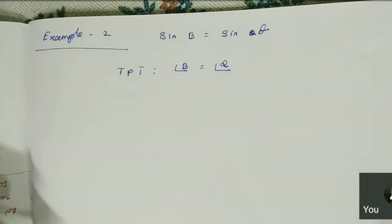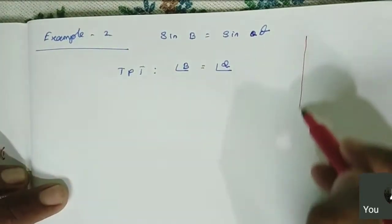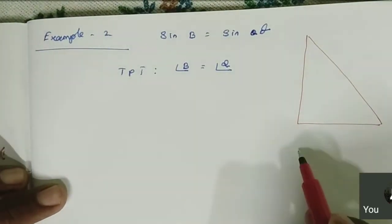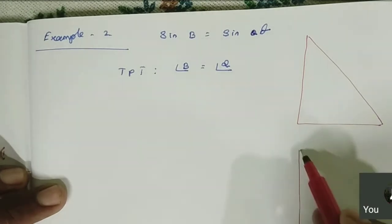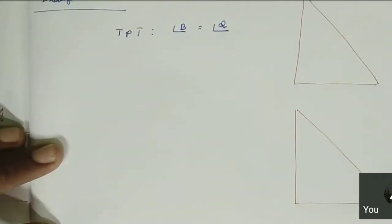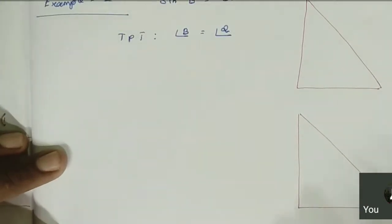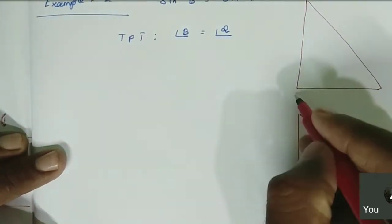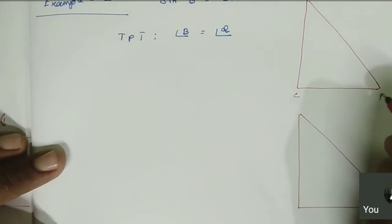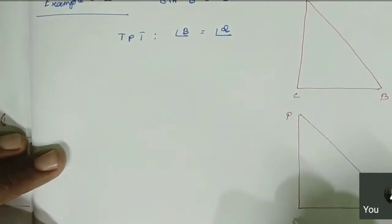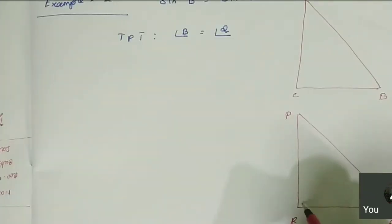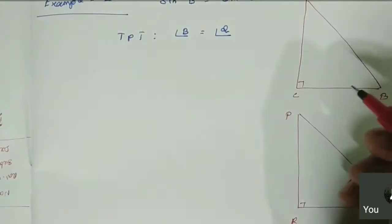Since these are acute angles, we draw right angle triangles. We consider two right angle triangles. We mark the first one as A, B, C and the second one as P, Q, R, with right angle at C and right angle at R.